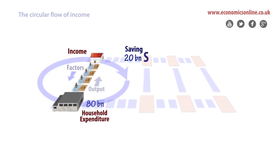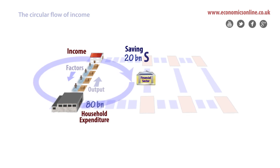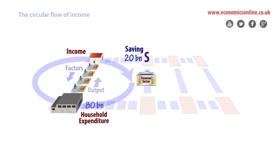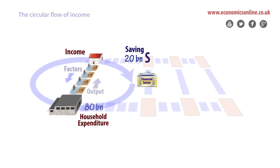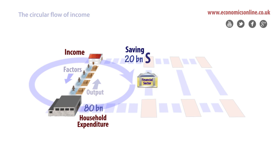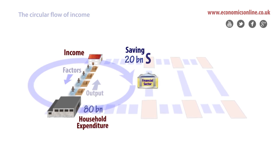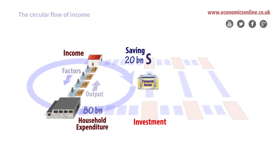Financial institutions have evolved to accept this unspent income in the form of bank deposits. As income circulates and firms produce more output, machinery and other capital wears out, and new capital is required. This may be funded by borrowing from the financial sector, which holds the economy's unspent income. Investment spending represents an injection back into the circular flow. In this way, savings is returned back into the economy through investments.